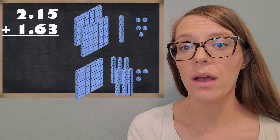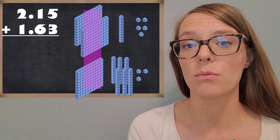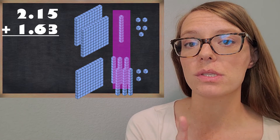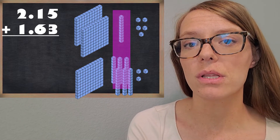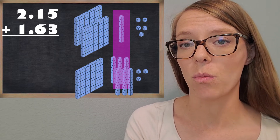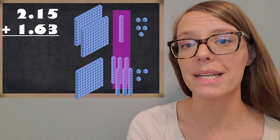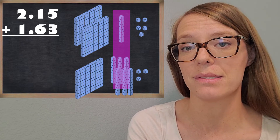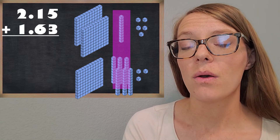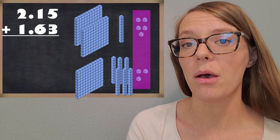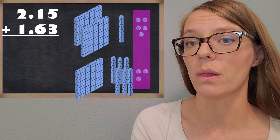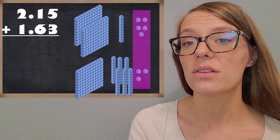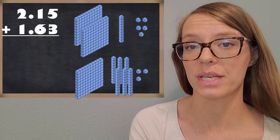But we're going to switch these around to help us understand our decimal numbers too. So now in this case, that flat is — we're going to call it the one whole. Then we're going to look at those longs. How many of those longs does it take to make up the one whole? Great — 10. So we're going to call those our tenths place. And then what about the unit? How many of those would it take to fill up the whole? Great — 100. So we're going to call those the hundredths place.